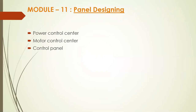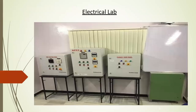Panel designing is also very important in automation because all electrical products — be it switchgear or automation components — cannot be kept on the floor or mounted on the wall, so they go inside an enclosure called a panel. We will discuss mainly three types of panels: Power Control Center (PCC), Motor Control Center (MCC), and Control Panel. The PCC is used for power distribution, the MCC controls motors, and the control panel houses controllers like PLC, HMI, and VFD.